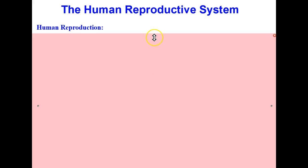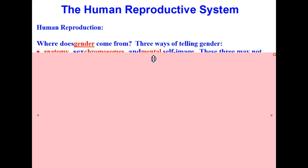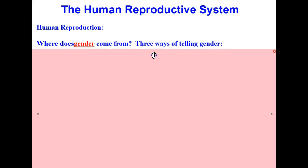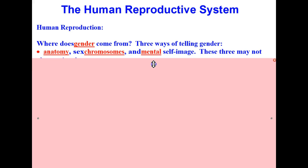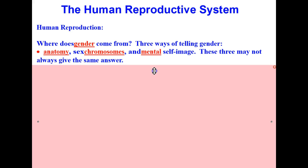Human reproduction — where does gender come from? There are three ways of determining gender. One is anatomy, the second is sex chromosomes, and the third is mental self-image. These three may not always give the same answer.